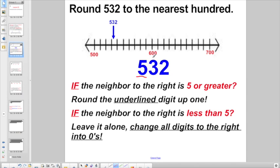So the neighbor to the right is 3. Is that 5 or greater? No, it is not. So if the neighbor to the right is less than 5, which 3 is, he's the neighbor to the right and he's less than 5, leave it alone and change all the digits to the right into 0. So leave that 5 alone, keep them as a 5, and change everything else to the right to 0's.